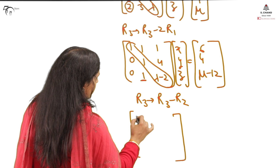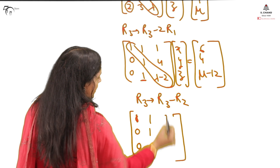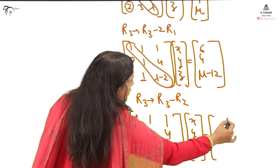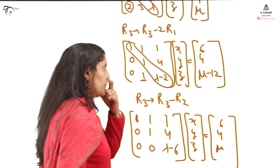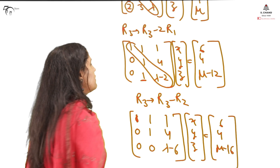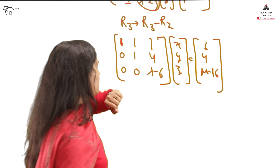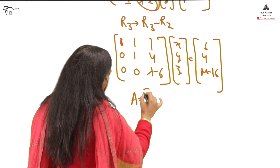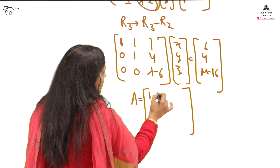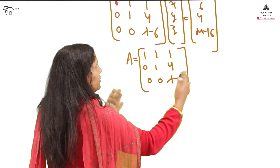Now applying R3 → R3 − R2 to eliminate the last below-diagonal element: 1−1=0. The final upper triangular matrix has rows [1 1 1], [0 1 4], [0 0 λ−6] with B values 6, 4, and μ−16. We now consider the A matrix and the augmented matrix [A|B] separately to discuss all three cases.